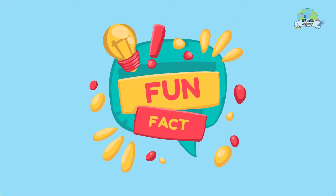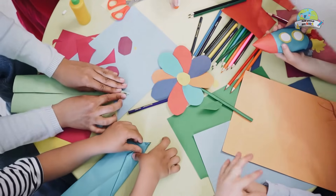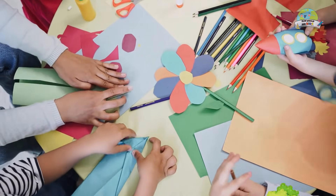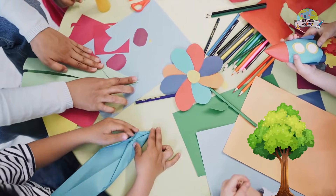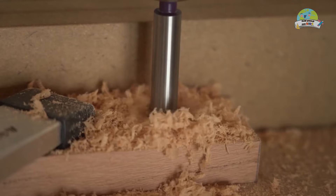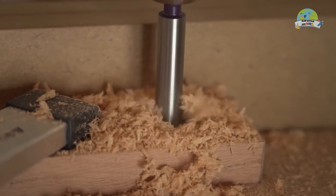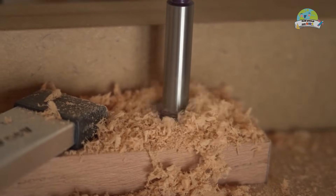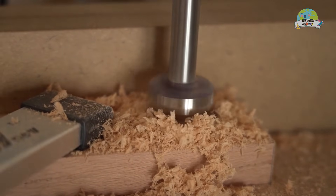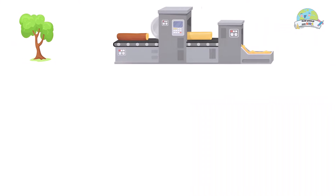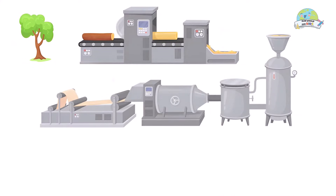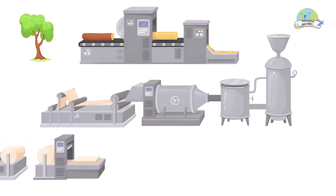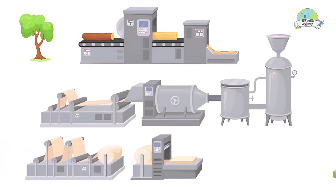Here comes my fun fact. Did you know that paper is made of wood? Yes! To obtain paper, cellulose fibers are used, obtained from crushed wood, which is combined with water and other chemicals, and then smoothed and turned into paper to create a thousand stories.